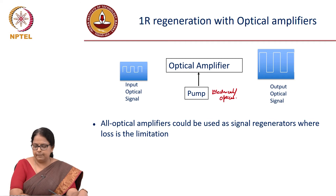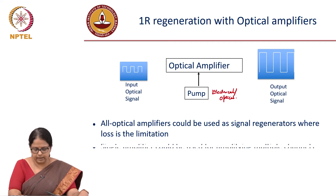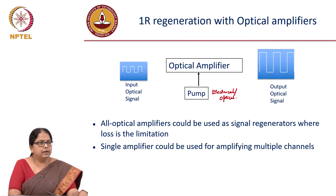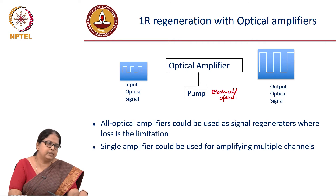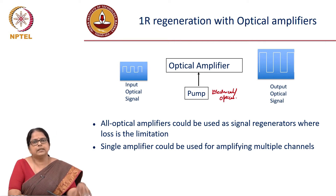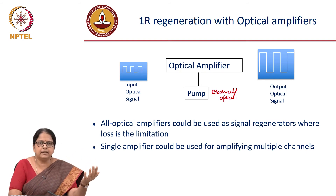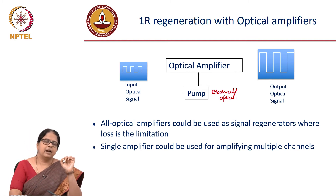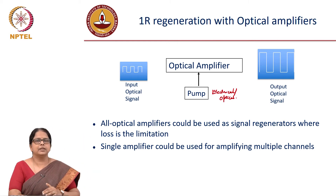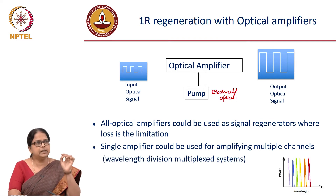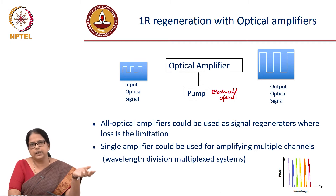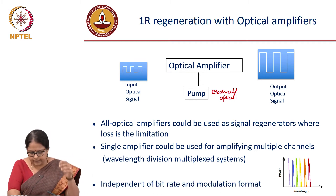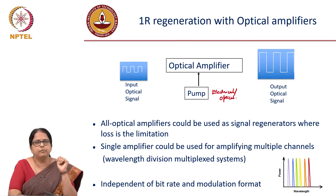All optical amplifiers can be used as signal regenerators where loss is the limitation. More importantly, this became a very big success because a single amplifier could be used for amplifying multiple wavelength channels. In wavelength division multiplexing, the same optical carrier carries multiple wavelength signals, each modulated independently. If you were to use an electronic amplifier with an 80-channel system, you would need 80 optical-to-electrical and electrical-to-optical conversions. With an optical amplifier that can simultaneously amplify all the colors, there is a lot of saving in energy. Also, the optical amplifier is independent of bit rate or modulation format.